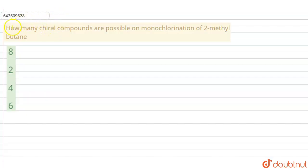Hello students, let's start the question. How many chiral compounds are possible on monochlorination of 2-methyl butane? Yes, 2-methyl butane. So we have been given the options and we got to identify that.